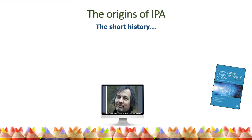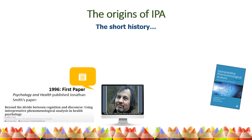IPA emerged in the UK in the 1990s. Jonathan Smith published the first paper on IPA in 1996, making the history of IPA itself fairly short. In his paper Smith argued for a new approach in psychology that would capture the qualitative and experience-based aspects of phenomena while still engaging with the theory and literature within mainstream psychology. The key push was a recognition of the qualitative approach grounded in psychology rather than borrowing methodologies from other disciplines such as sociology.